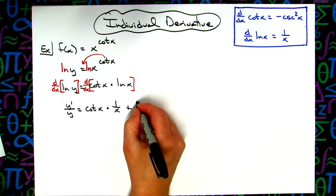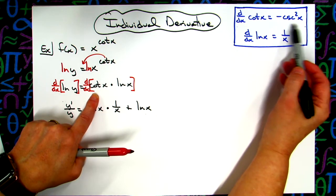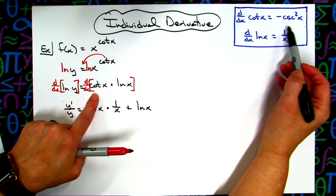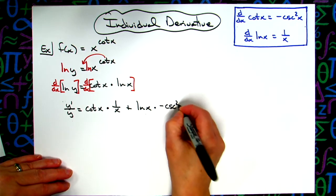And then plus the second function, ln(x), times the derivative of the first function. Hopefully that's memorized as negative csc²(x). So we'll have -csc²(x).